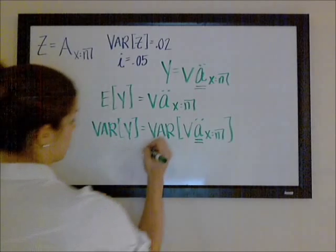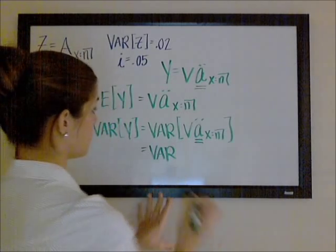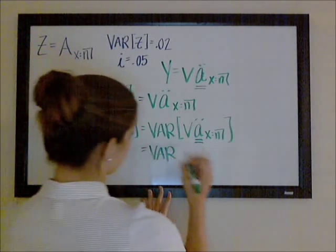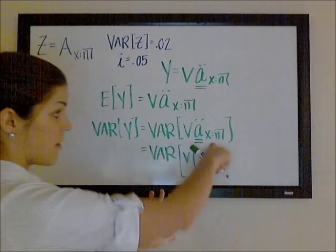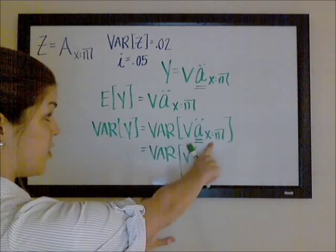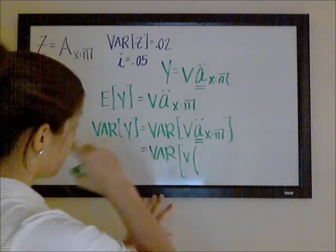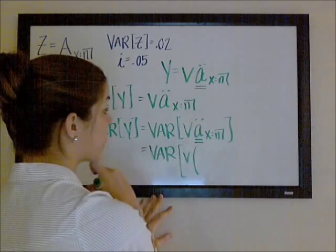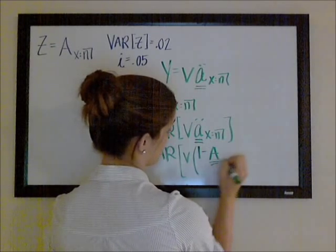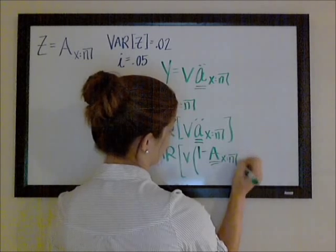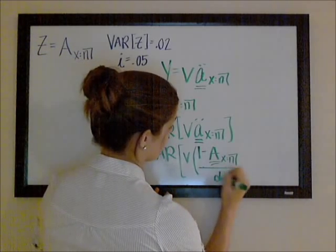Now this should simplify pretty nicely. So this is going to be the variance of V times... We can write this annuity as 1 minus the corresponding insurance over whatever appropriate interest rate. Here it's going to be D since we have an annuity due. So this would be 1 minus the true present value of this end-year endowment insurance over D.